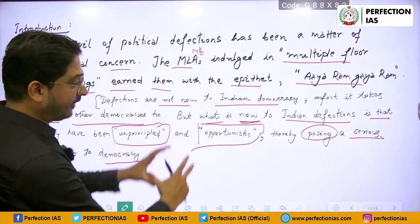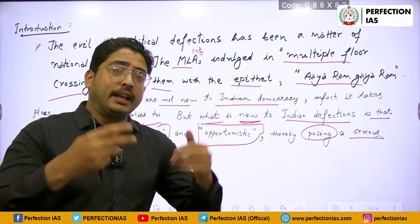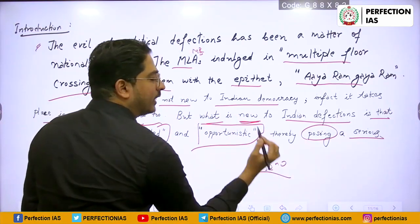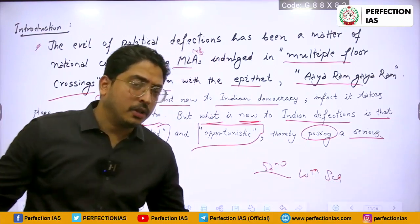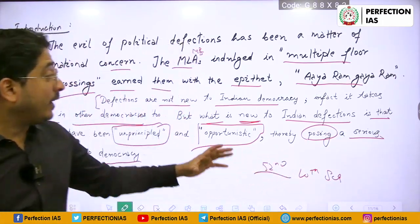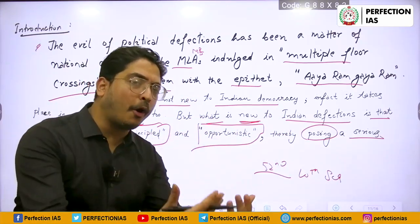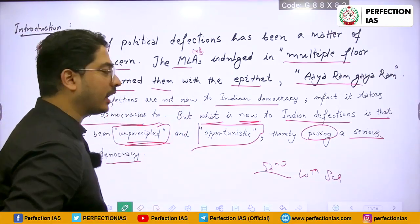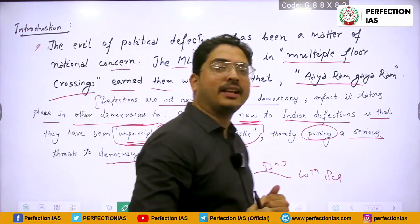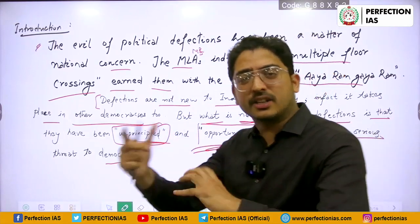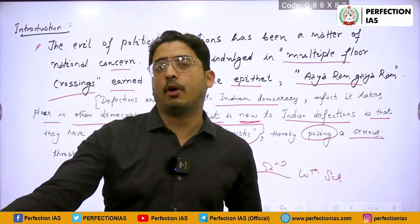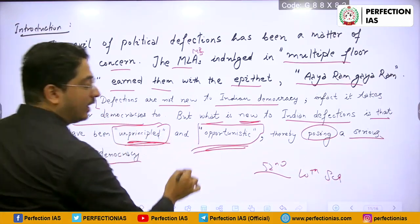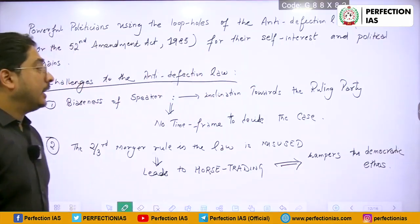The perspective I am putting is: defection is not new, it happened before, but what is new now is that it has become unprincipled — done for self-interest — and opportunistic, using opportunities to form governments, especially when the Centre and state have different ruling parties. So it poses a serious threat to democracy. Now coming to the analysis.